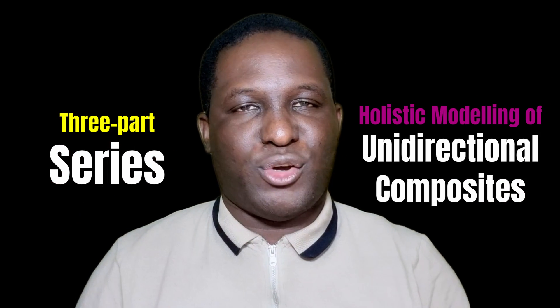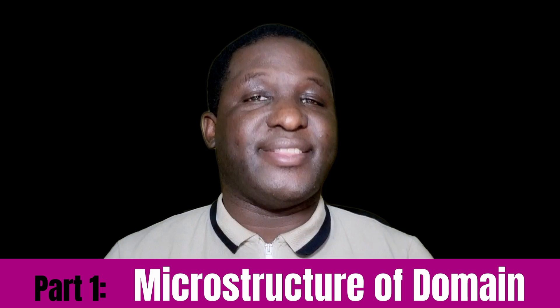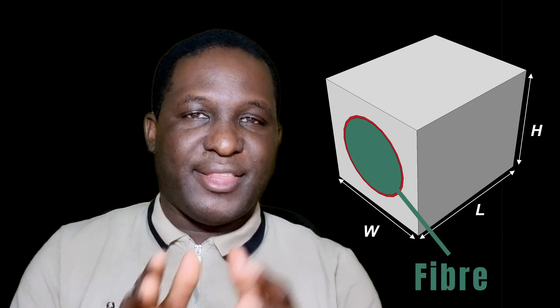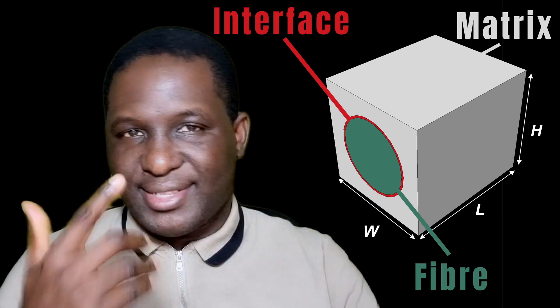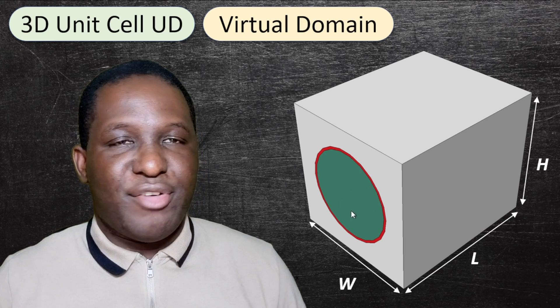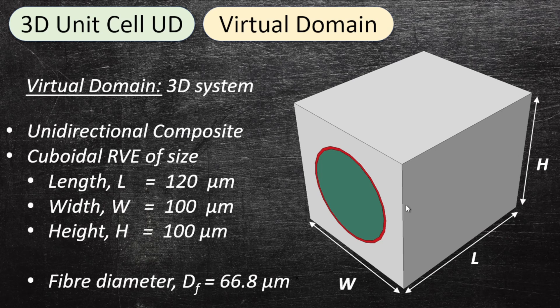This is the first of a three-part series of videos about the holistic modeling of unidirectional composites. This first video targets creating the micro-scale representation of the domain — showing how to create the fiber, the matrix, and the interface, and the thinking behind this. Here's a model where you can see the matrix, the green region is the fiber, and the red region is the interface, with all dimensions given.